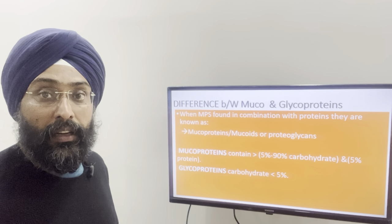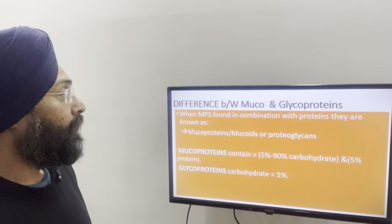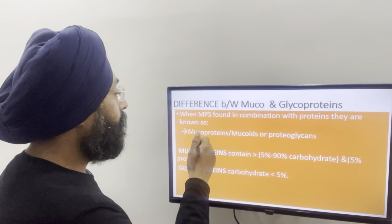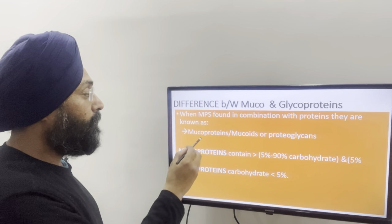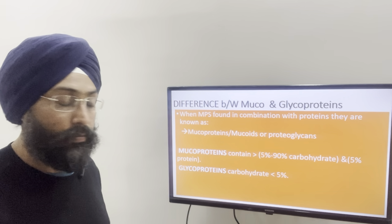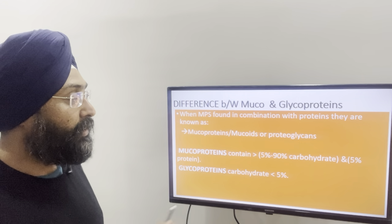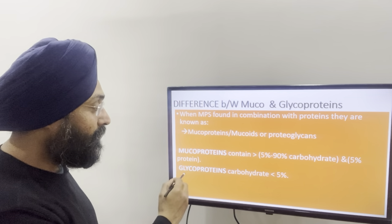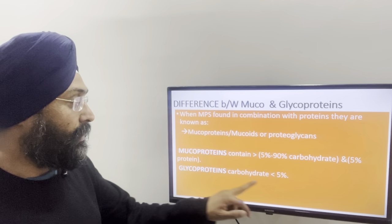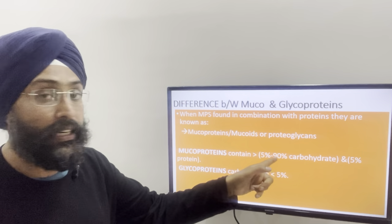Now coming on to the difference between mucopolysaccharides, mucoproteins and glycoproteins. Mucoproteins are formed by a combination of protein and carbohydrate, also called mucoids and proteoglycans. Mucoproteins contain greater than 5% carbohydrates, and the carbohydrate content can vary up to 90%. But in glycoproteins, the carbohydrate content is always less than 5%. So this is the major difference: in glycoproteins, carbohydrate content is less than 5%, and in mucoproteins, it is always greater than 5%.